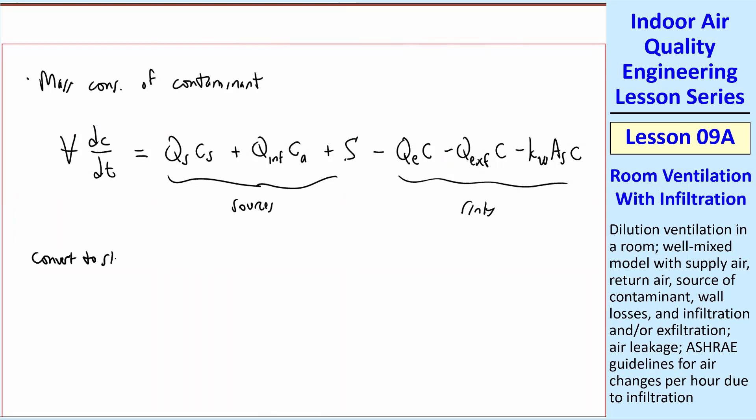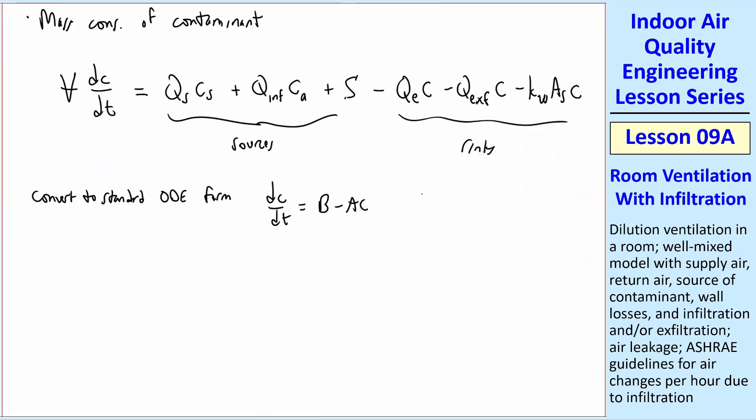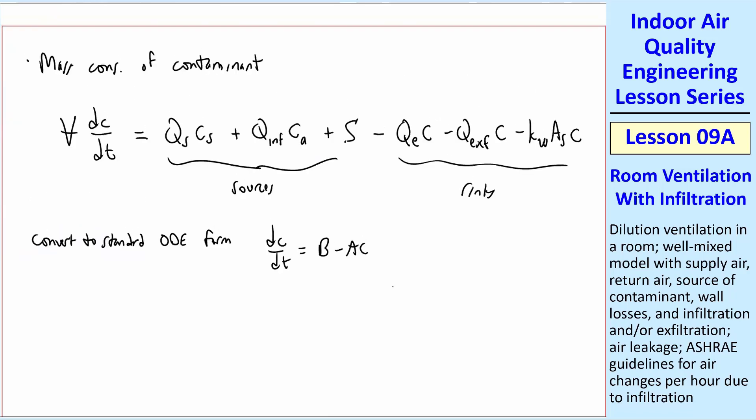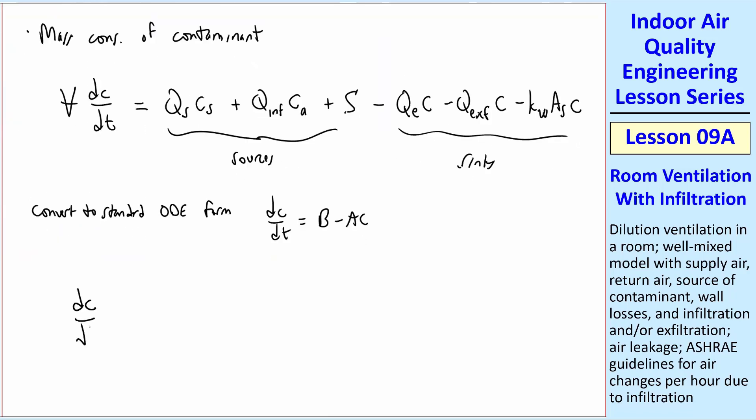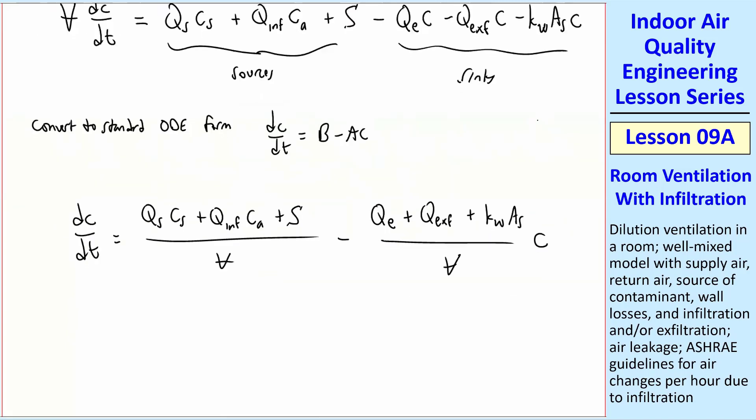We convert to standard ODE form. The key, as I've said many times, is to collect all the terms with a C and all the terms without the C. We get dC/dt equal Q_S C_S plus Q_INF C_A plus S over V minus (Q_E plus Q_EXFILTRATION plus K_W A_S) all divided by V. And that whole thing is multiplied by C. B is equal to this collection of terms and A is equal to this collection of terms without the minus sign.